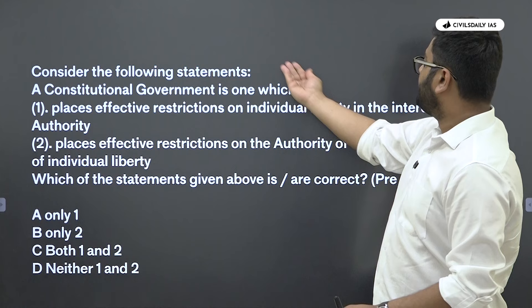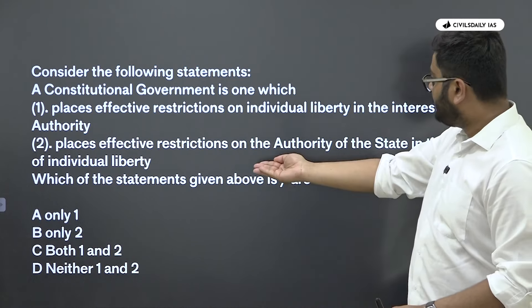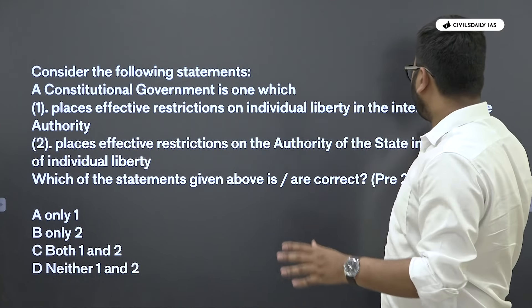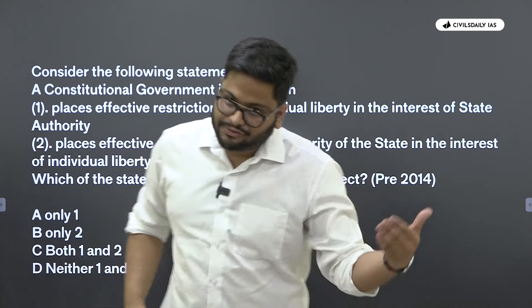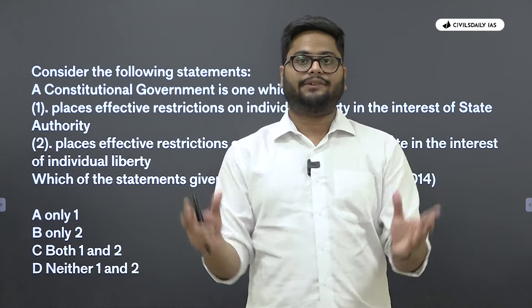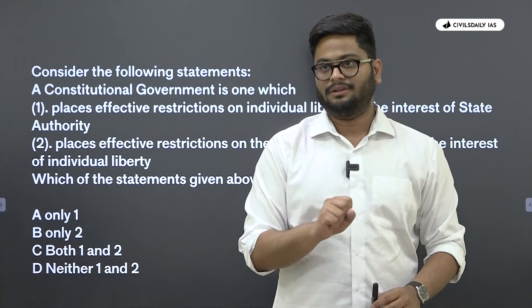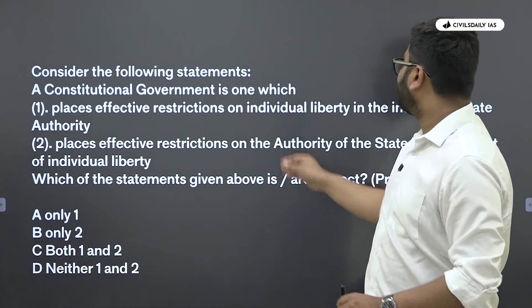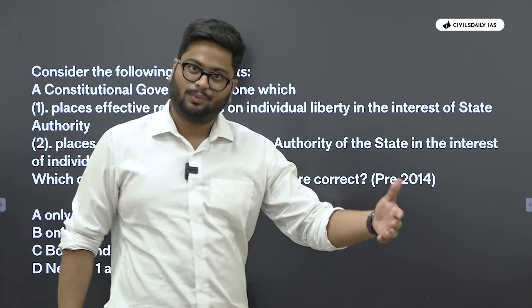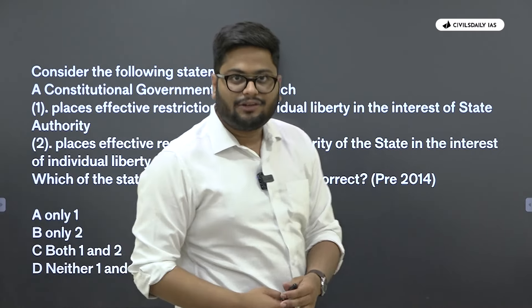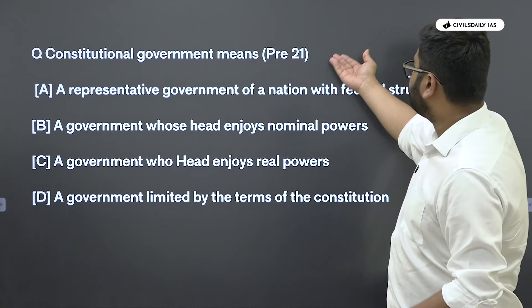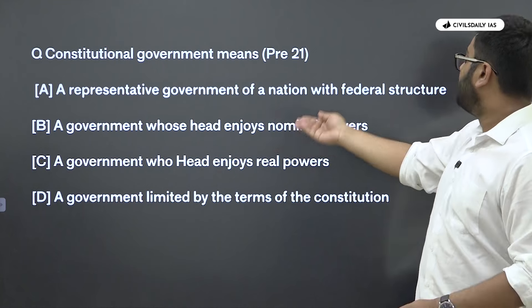For example, a Prelims MCQ: 'Constitutional government is which — one that places effective restriction on individual liberty in the interest of state authority, or one that places effective restrictions on the authority of state in the interest of individual liberty?' The second option is correct — quite an easy question. But when I teach you constitutionalism, I'll explain that a government gains all its authority from the constitution, and the constitution is the only source that limits the government or the state.